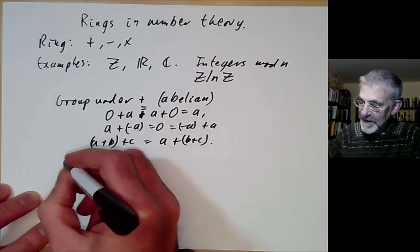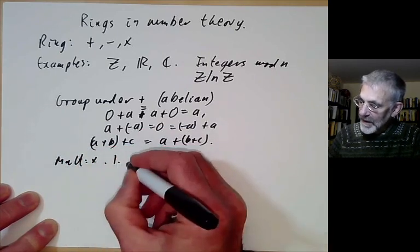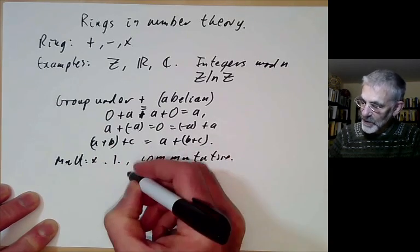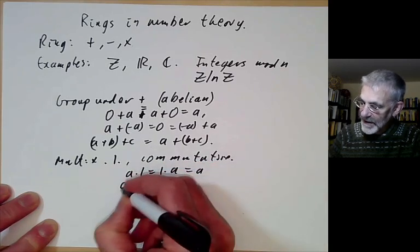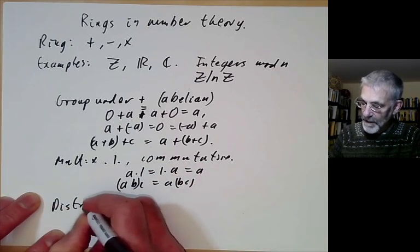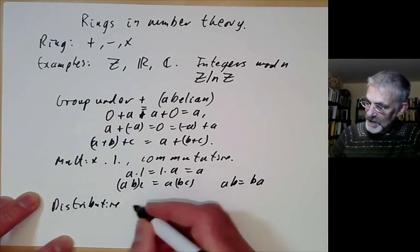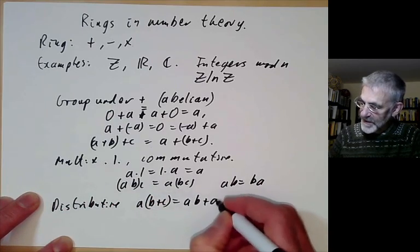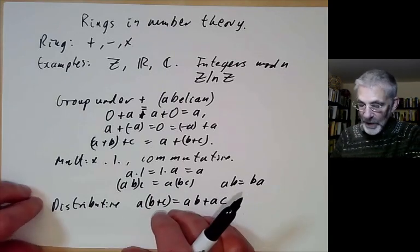The ring also has a multiplication with an identity that is commutative — we're only using commutative rings. So a·1 = 1·a = a, and (ab)c = a(bc). We also have the distributive rule: a·(b + c) = ab + ac. Since we're taking rings to be commutative, ab = ba, so we don't need a second distributive rule.